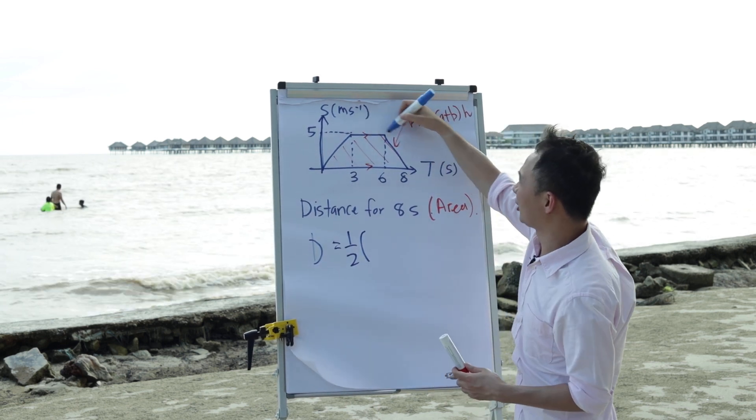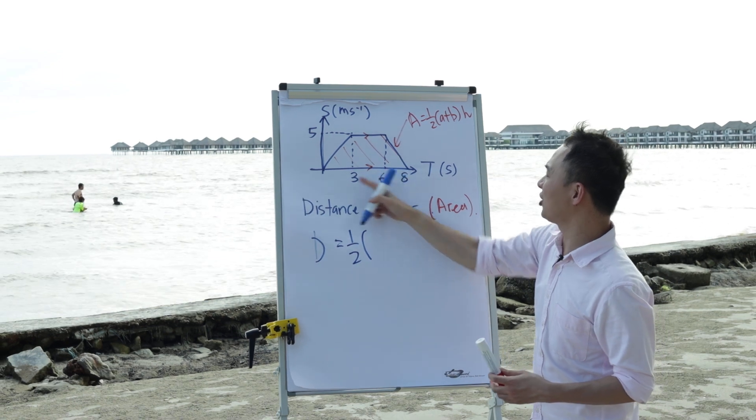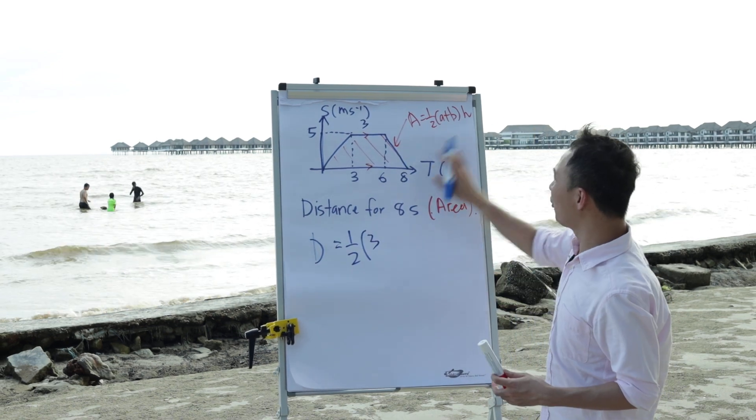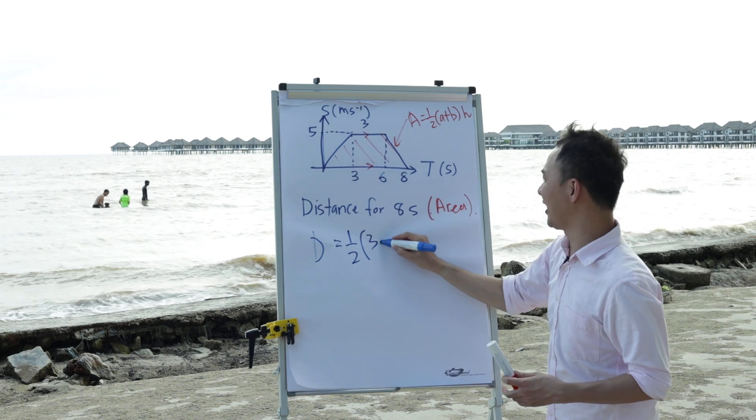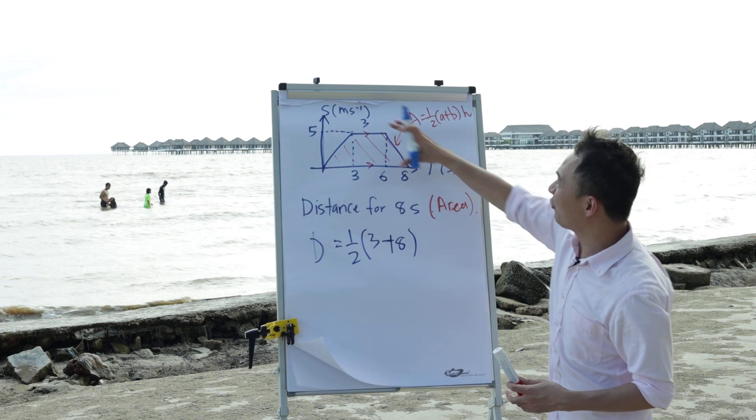my A will be on the top here, 6 minus 3 which is 3 on the top here, and my B will be bottom 0 to 8 which is 8 seconds, and my height will be 5.